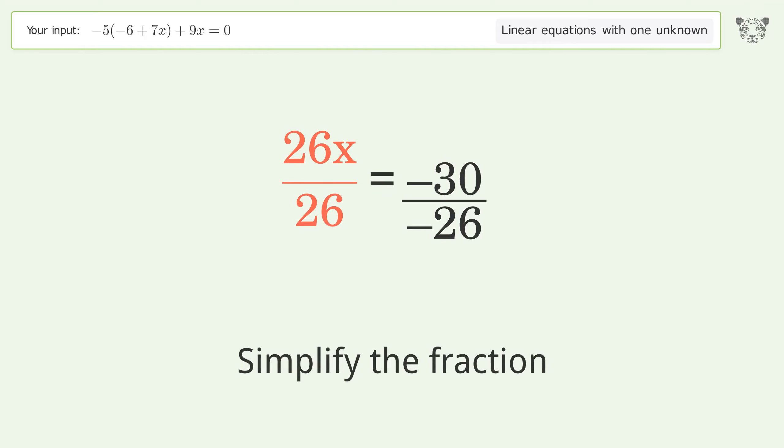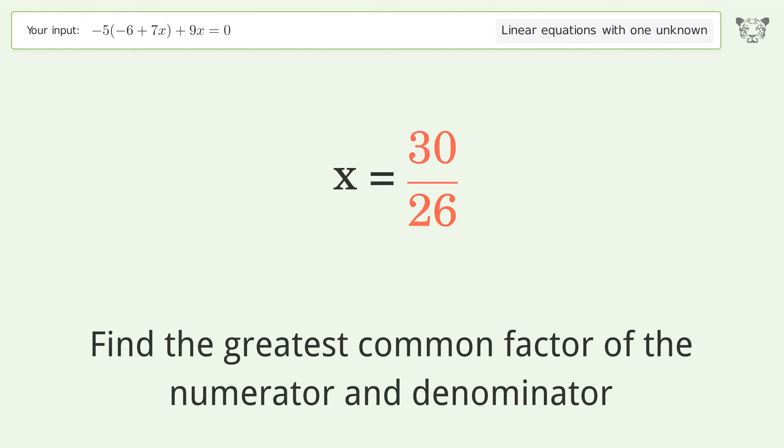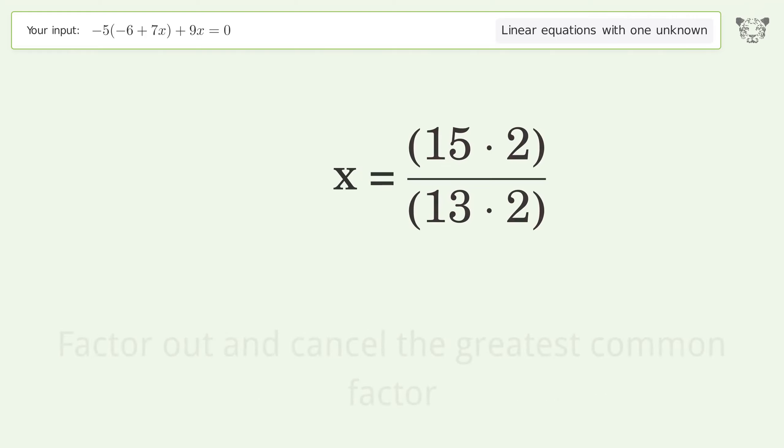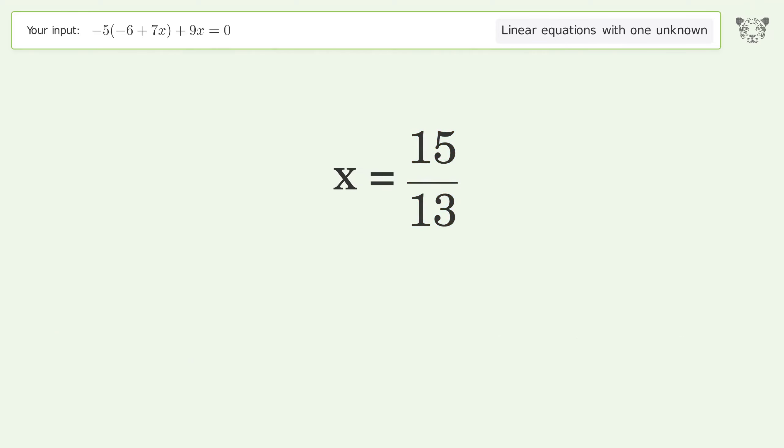Simplify the fraction. Cancel out the negatives, find the greatest common factor of the numerator and denominator, and factor out and cancel the greatest common factor. The final result is x equals 15 over 13.